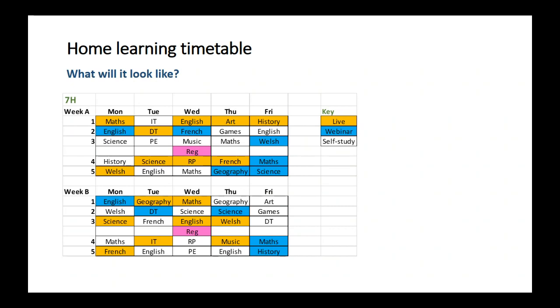Period two is an English webinar. Again, this can be accessed via your Google Classroom. Period three is self-study science, so during this time you should get on with any activities that your teacher has set for you in science. Similarly, period four is a self-study period for history. Period five on Monday of week A is a live Welsh lesson, and again you should join the lesson via the Google Meet link.